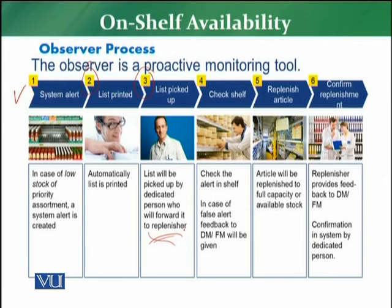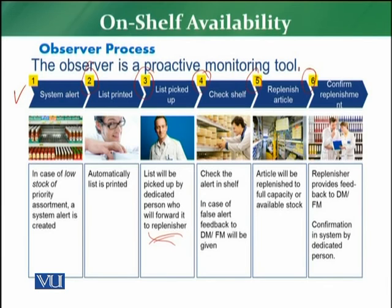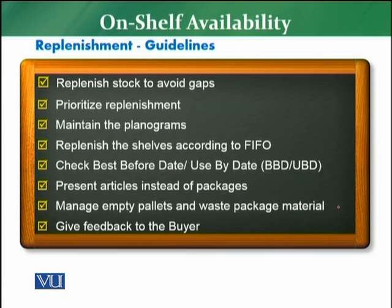Fourth, check the shelf — if the products are already available on the shelf, it was a false alert and you can make corrections immediately. Fifth, replenish the articles to full capacity or available stock. Sixth, confirm the replenishment — the system gives an alert, and you must update it or give feedback to the department manager or floor manager so they can confirm in the system that replenishment has been done properly and no gap remains.